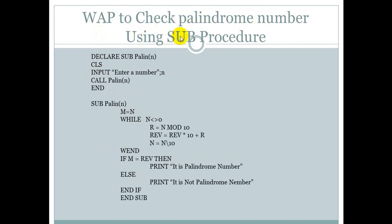This next program explains checking a palindrome number using a sub procedure — this is modular programming. First, we declare the procedure: declare sub palind, where N is the parameter. We take input in the main module and use the call palind statement to call the sub procedure.